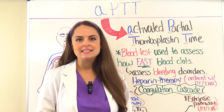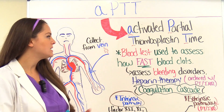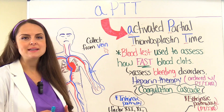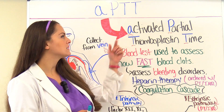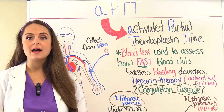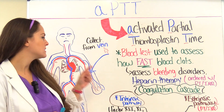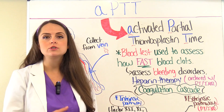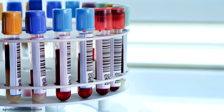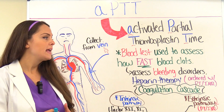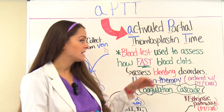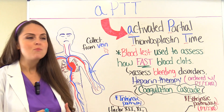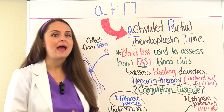What is an APTT? This is a blood test used to assess how fast the blood clots. APTT stands for activated partial thromboplastin time. How we collect this test is we stick a patient's vein, remove some blood, put it in a special tube, and send it to the lab. This test is helpful in determining if a patient has a bleeding disorder, because it looks at specific clotting factors within the coagulation cascade.